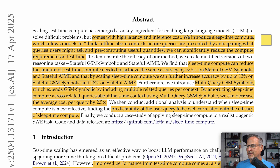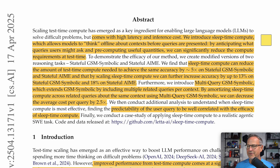Furthermore, they introduce multi-query GSM Symbolic, which extends GSM Symbolic by including multiple related queries per context — in other words, you can ask many questions about the same context. By amortizing sleep time compute across related queries about the same context, they can decrease the average cost per query by 2.5x, which is very significant. They also conduct analysis to understand when sleep time compute is most effective, finding that the predictability of the user query is well correlated with the efficiency of sleep time compute.